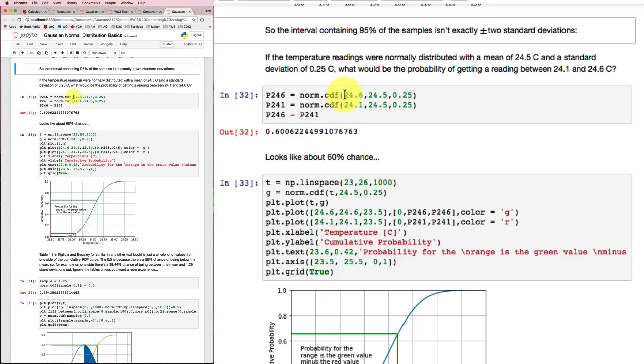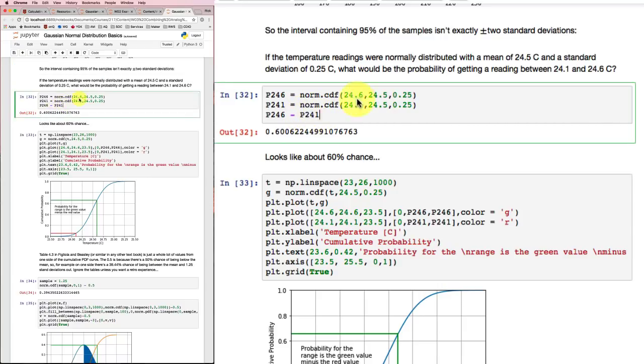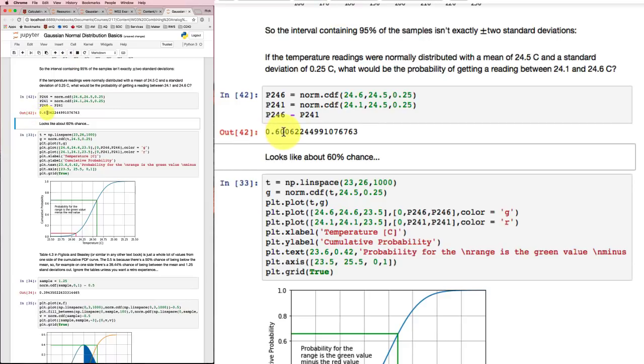So if we look for 24.6, that's the high end, mean of 24.5 and 0.25. So that's the probability that the value is less than 24.6. And then this is the probability that the value is less than 24.1. And if it's going to be in between 24.1 and 24.6, then it's going to be the probability for 24.6 minus the probability for 24.1. And when we do that calculation, we wind up with 60%. So about a 60% chance of getting into that range.